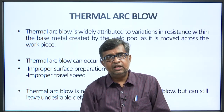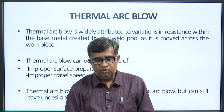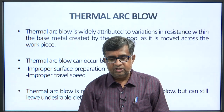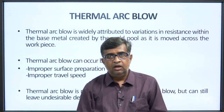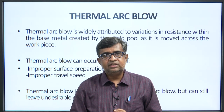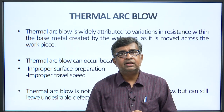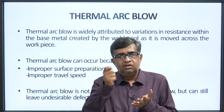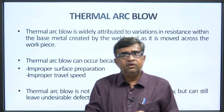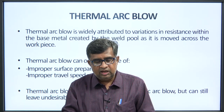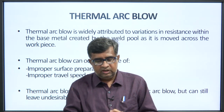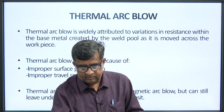The other type of arc blow is thermal arc blow. Thermal arc blow is widely attributed to variation in resistance within the base metal created by the weld pool as it moves across the work piece. Thermal arc blow occurs because of improper surface preparation and improper travel speed — for example, moving the torch too fast instead of in a uniform manner. Thermal arc blow is not as severe as magnetic arc blow, but it can still leave irreparable defects in the weld beads and weld deposits.